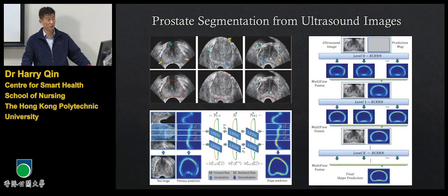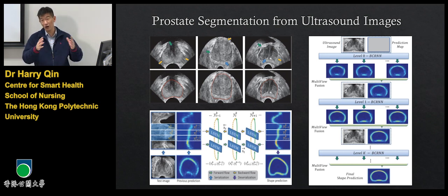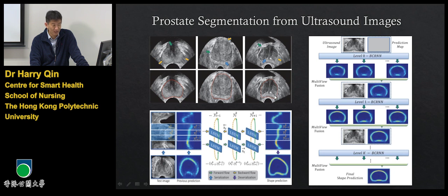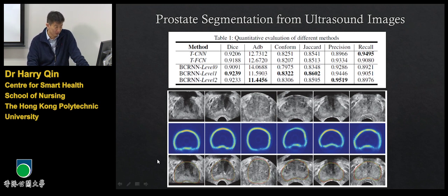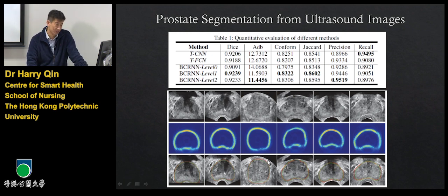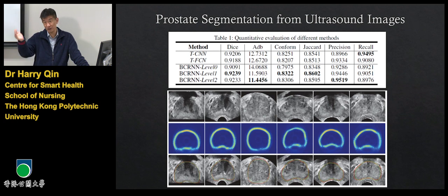We further developed new networks for prostate segmentation from ultrasound images. Compared with MR images, the main challenge of ultrasound images is that their quality is relatively low — there are a lot of speckle noises and artifacts. So we developed a new mechanism to handle the noise and the boundary discontinuity. You can see the results — the green lines are the ground truth labeled by radiologists and doctors, and the red lines are our results. Our results are very close to the ground truth, and this technique can help radiologists identify the boundary of the prostate.